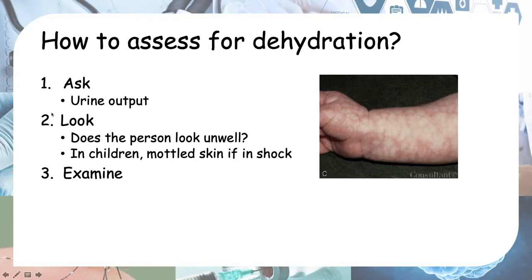One exception is when a patient is taking diuretics — drugs that increase urine output. In this case they'll be dehydrated but will actually have increased urine output. However, most of the time when urine output is low, it means they are not taking enough fluids, or fluids are flowing into a third space, and hence they are dehydrated.